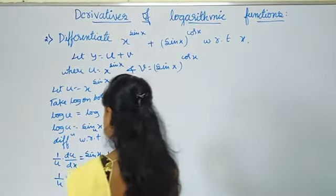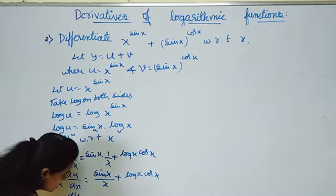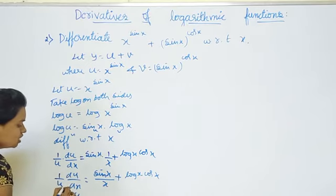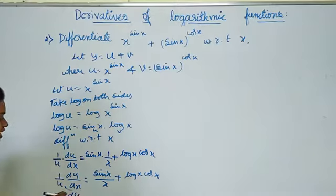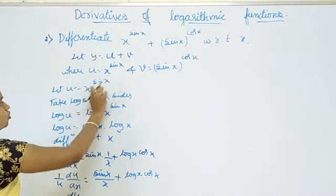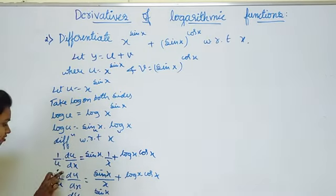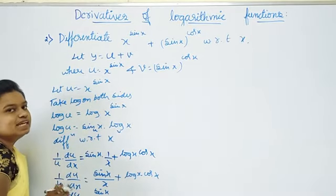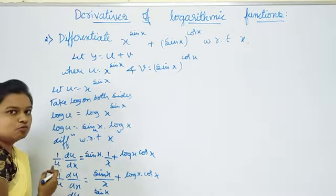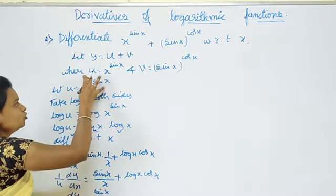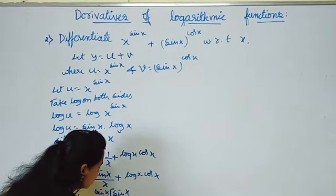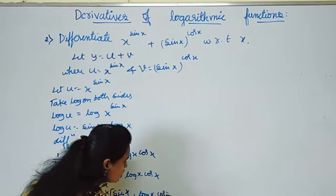We want only du by dx, so shift u to the right side. It comes to the numerator. The value of u is x power sin x. So du by dx equals x power sin x into sin x divided by x plus log x into cos x.